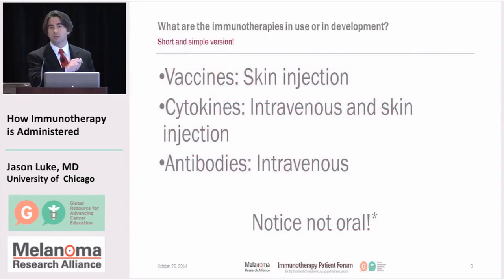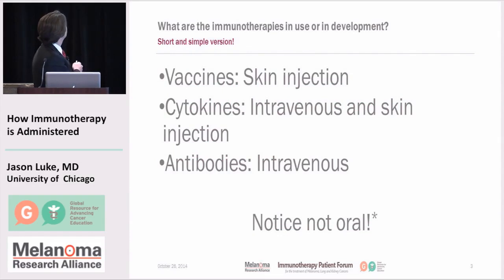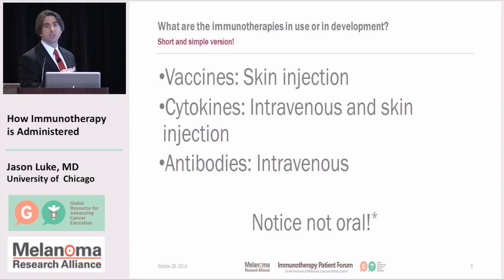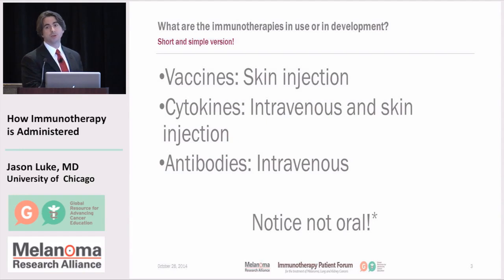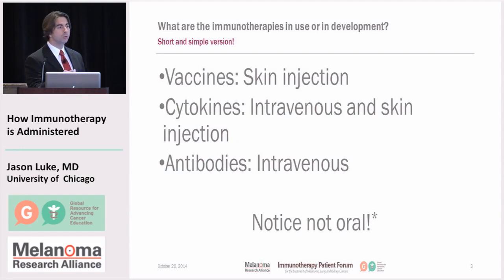Here's the answer — we'll go through it in more detail. The three types of treatments I'm going to talk about are vaccine therapies, which are predominantly given as injections into the skin, just like your flu shot; cytokine therapies, which can be given intravenously or by skin injection; and monoclonal antibody therapies, which are given as intravenous treatments. Understanding what these treatments do will really help you understand why it is we give them the way that we do.